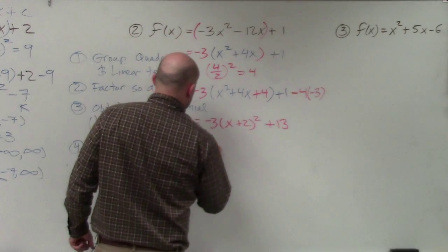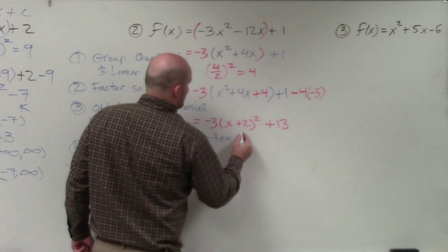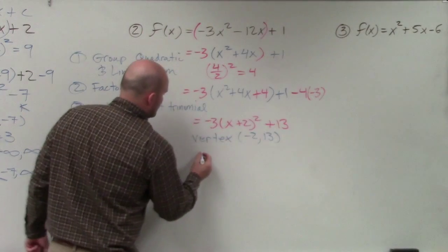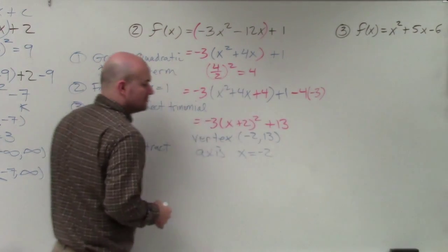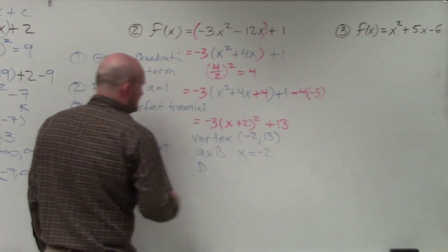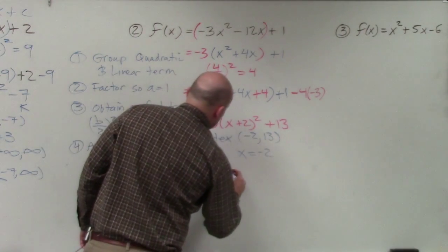So now, my vertex is going to be negative 2 comma 13. My axis of symmetry is going to be x equals negative 2. My domain is going to be all real numbers.